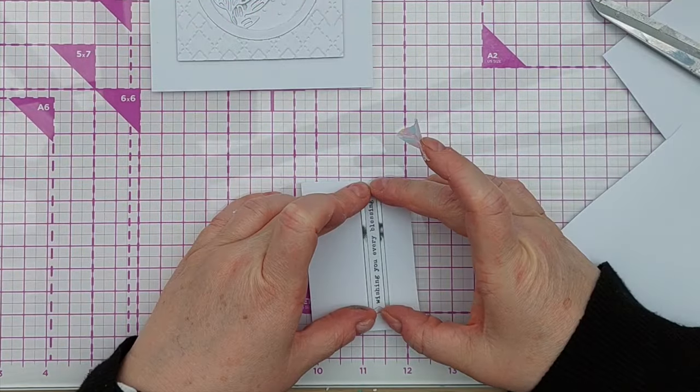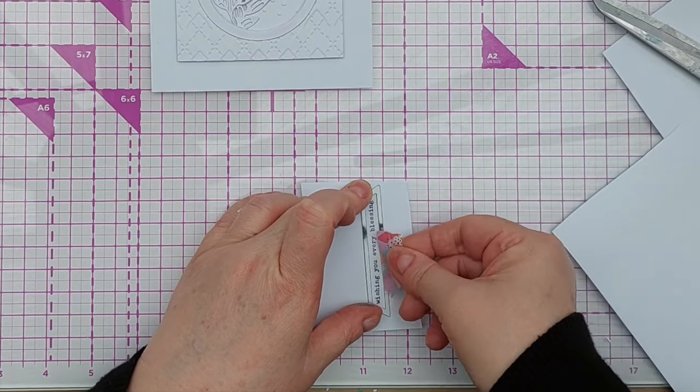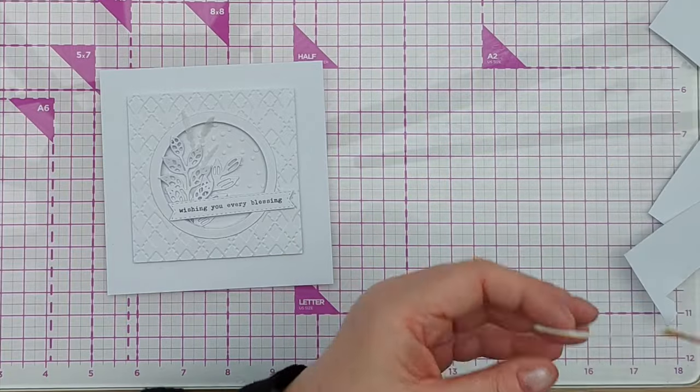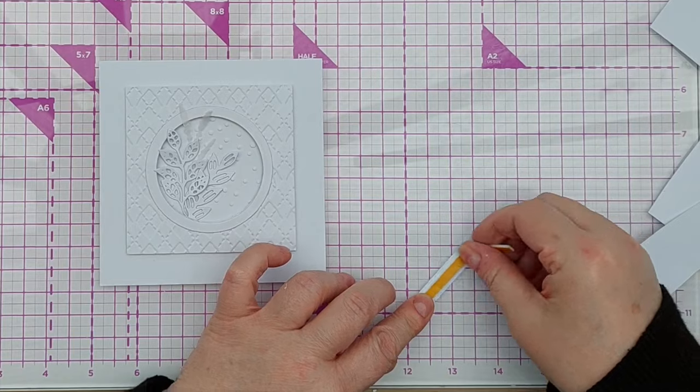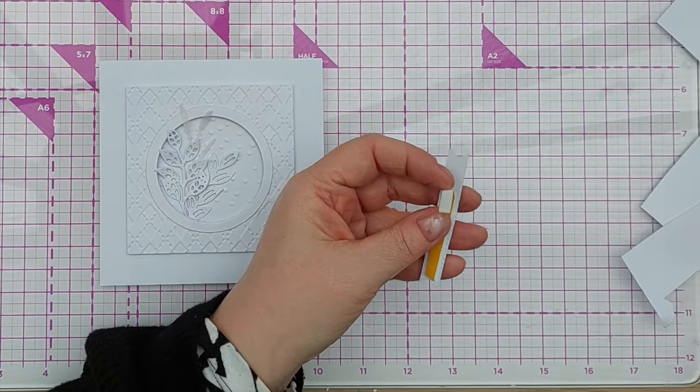My sentiment says wishing you every blessing and I typed it using my vintage typewriter and then I cut it out using a stitched banner die which just so happened to be the perfect length for the job. I added foam tape to part of the banner and added the sentiment so that it linked all the layers together. I hope you can see what I mean.